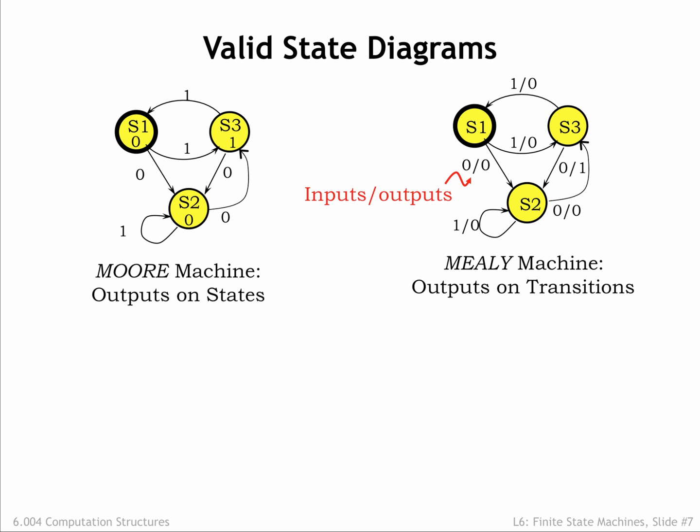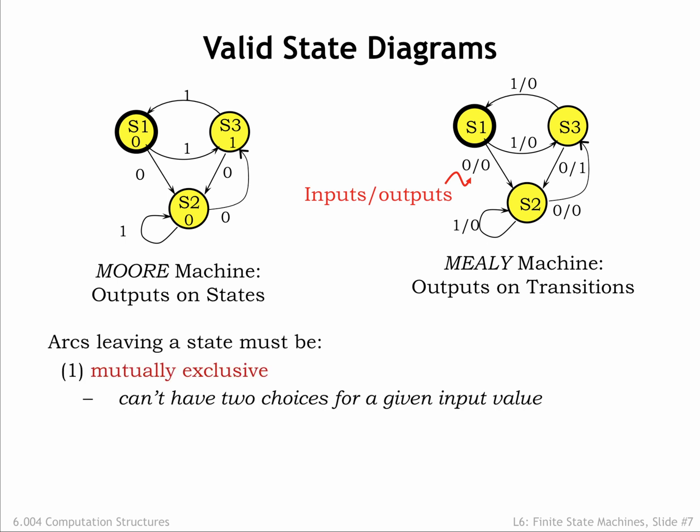There are some simple rules we can use to check that a state transition diagram is well-formed. The transitions from a particular state must be mutually exclusive. In other words, for each state there can't be more than one transition with the same input label. This makes sense. If the FSM is to operate consistently, there can't be any ambiguity about the next state for a given current state and input. By consistently, we mean that the FSM should make the same transition if it's restarted at the same starting state and given the same input sequences.